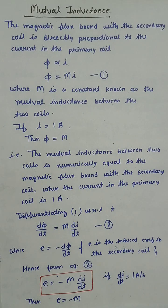If I equals 1A, then phi equals M. That is, the mutual inductance between the two coils is numerically equal to the magnetic flux bound with the secondary coil when the current in the primary coil is 1A.